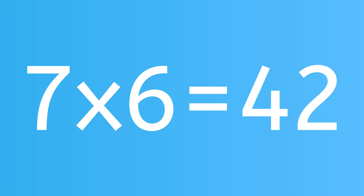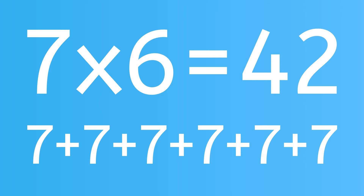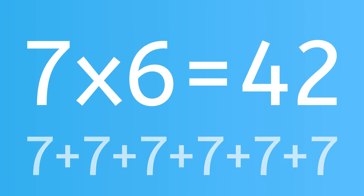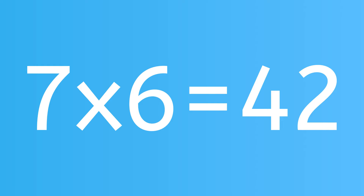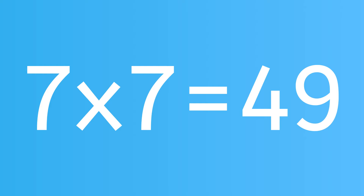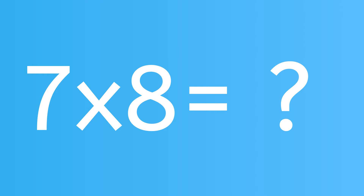While multiplying harder numbers is more challenging than simple numbers, the concept is the same — you're adding up groups of numbers. For instance, 7 times 6 is equal to 42. That's 6 groups of 7, or 7 plus 7 plus 7 plus 7 plus 7 plus 7. If you add 7 more to that, it becomes 7 times 7 equals 49. So how much is 7 times 8? 7 times 8 is 56.